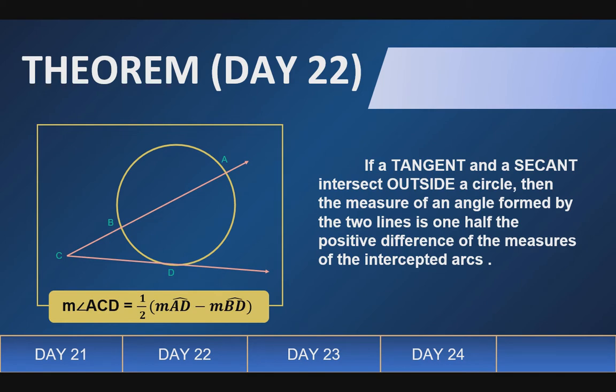So, kung mapapansin nyo, meron siyang dalawang arc na na-intercept. Itong arc AD, tapos yung arc BD. So, halos same lang or same lang din dun sa una natin theorem. Pag kukunin natin yung difference, yung positive difference ng dalawang intercepted arc, then imumultiply sa one half.